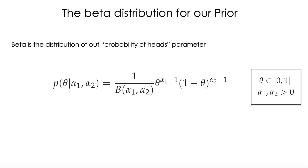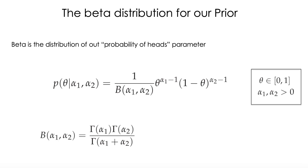This is a probability of another probability, which is theta, and that's why we call alpha1 and alpha2 hyper-parameters instead of parameters. Think of alpha1 and alpha2 as imaginary counts: alpha1 reflects imaginary counts of heads, and alpha2 the imaginary counts of tails. Those values naturally affect the probability of our coin parameter theta. The beta function depends on the gamma function, which is a generalization of the factorial. When alpha is a positive integer, we can use the factorial to calculate gamma and obtain the beta normalization constant.